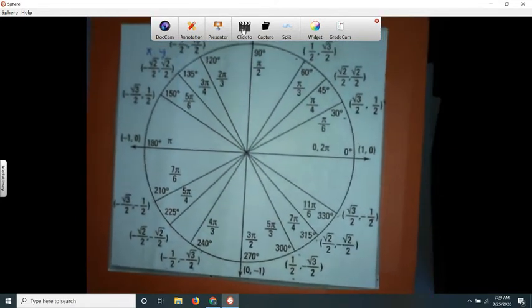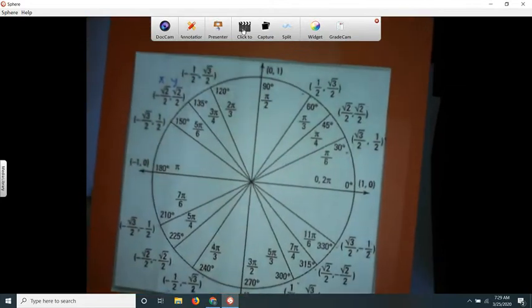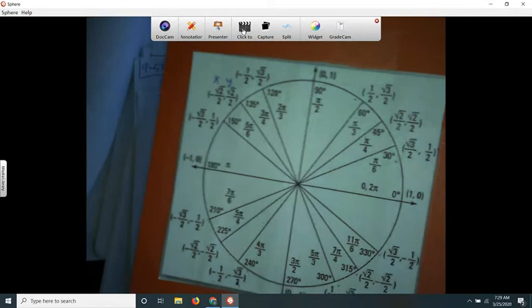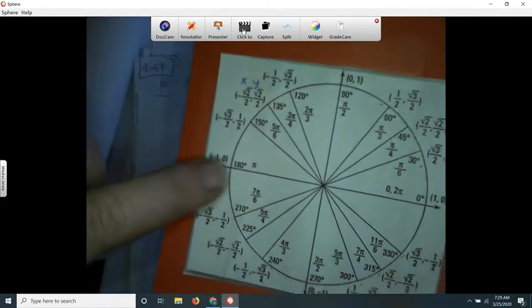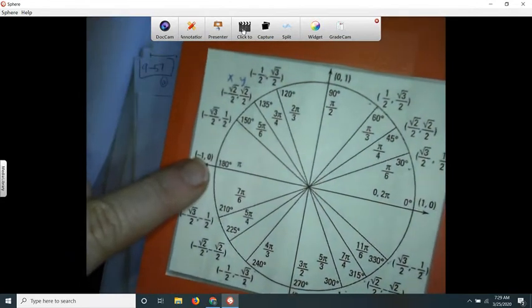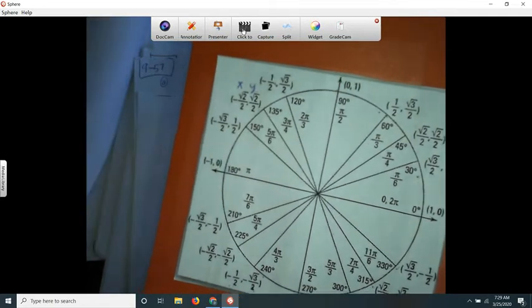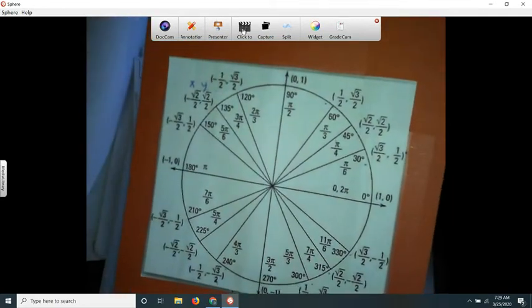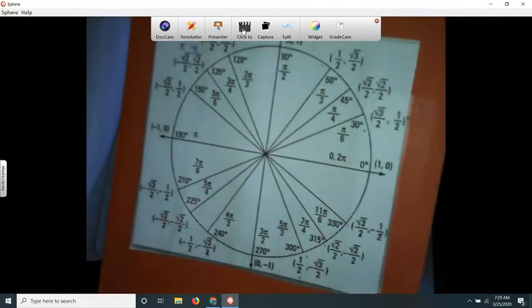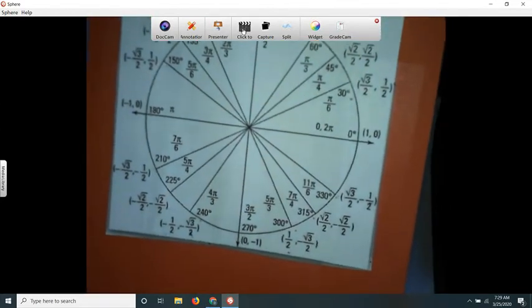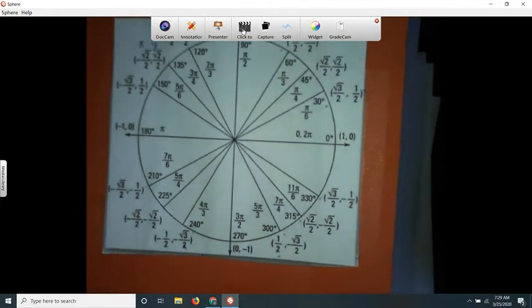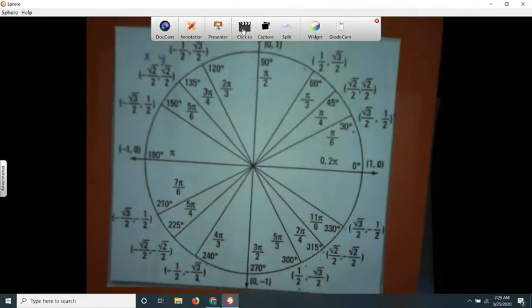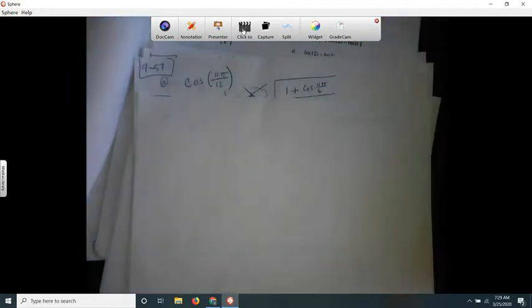Okay. 11π over 12, by the way, would be, let's see, 12π over 12 would be just halfway around the circle. So 11π over 12, just, you know, have this in the back of your mind. 11π over six is twice as much as 11π over 12.